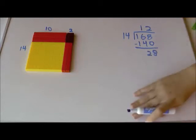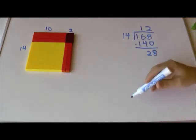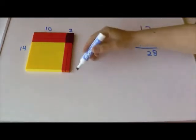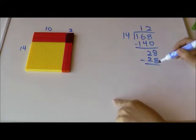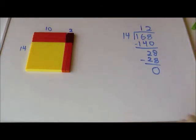And so how much did I take away when I had 28 down here? I took away 14 times two, and that's 28. I took away 28 and now I have zero left.